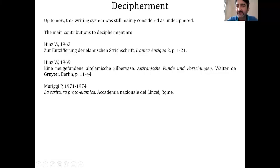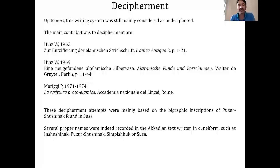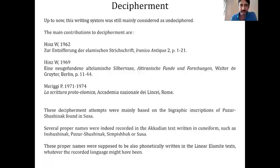Up to now, this writing system was still mainly considered undecipherable. There are two main contributions to the decipherment: two papers by Walter Hinz in the 1960s, and the very important work of Italian scholar Merigi in the early 1970s. These decipherment attempts were based on the large graphic inscription of Puzur-Inshushinak in Susa, because several proper names were recorded in Akkadian cuneiform texts — such as Inshushinak, Puzur-Inshushinak, Simbishruk, and Susa — and these names were supposed to be phonetically written in the Linear Elamite texts as well.